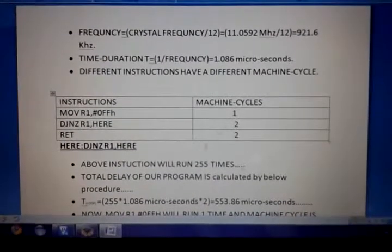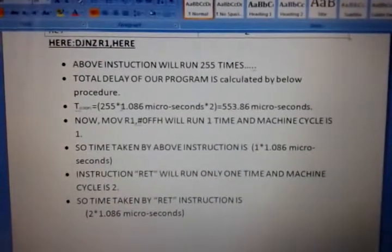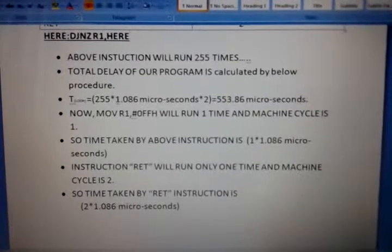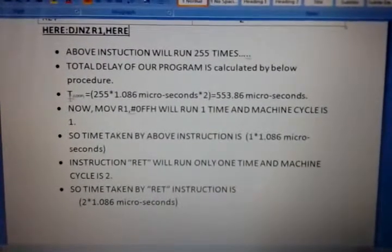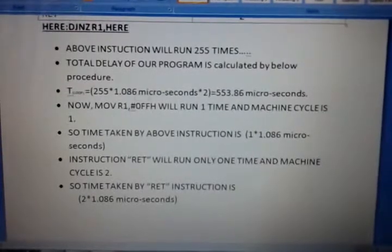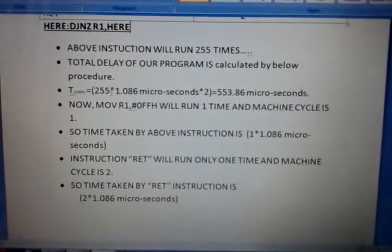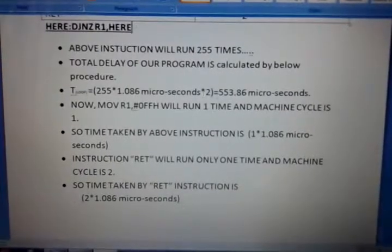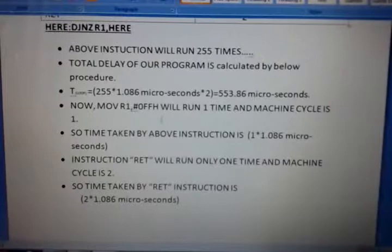The above instruction will run 255 times. The total delay of the loop is calculated as follows: time taken by the loop equals 255 × 1.086 microseconds × 2, where 2 is the machine cycle count for DJNZ, 1.086 microseconds is the time period, and 255 is the content of R1. This gives a loop delay of 553.86 microseconds.